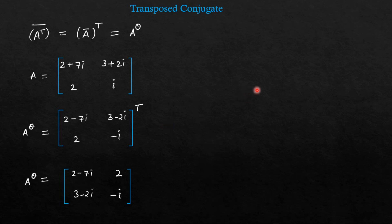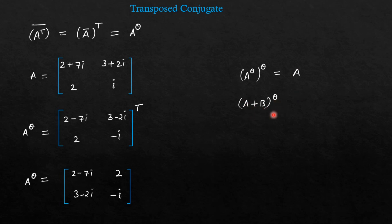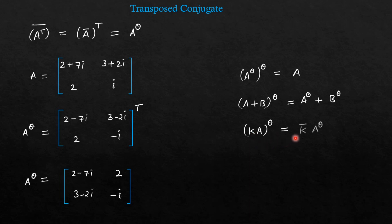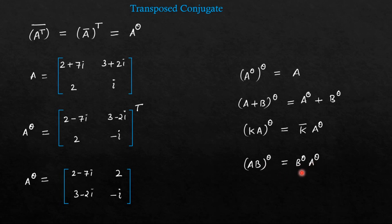It also has the same type of properties. If you take the double transpose conjugate, you will attain the same original matrix. Next, if you take the transpose conjugate of a sum of two matrices, you will get A theta plus B theta. Next, if you take the transpose conjugate of K into A — where K is a constant — you will get K bar times A theta, because transpose does not affect the constant; it will just be taken as conjugate K bar. And for AB theta, if you take the transpose conjugate of AB, you will get B theta into A theta — here the order is reversed because transpose is involved.